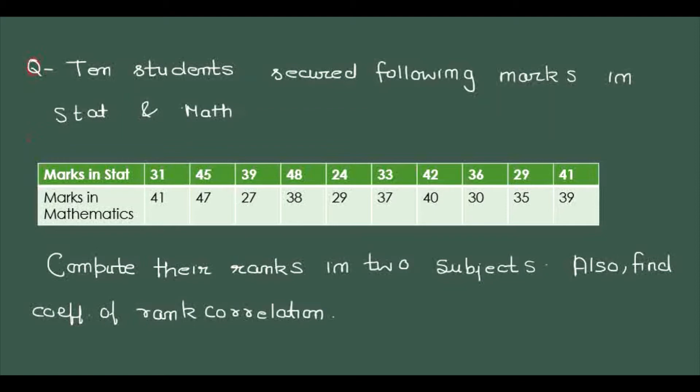We have three types of data: when you are given rank and the condition is not repeated, second when data is not given rank but no data is repeated, and third when the data is repeated.